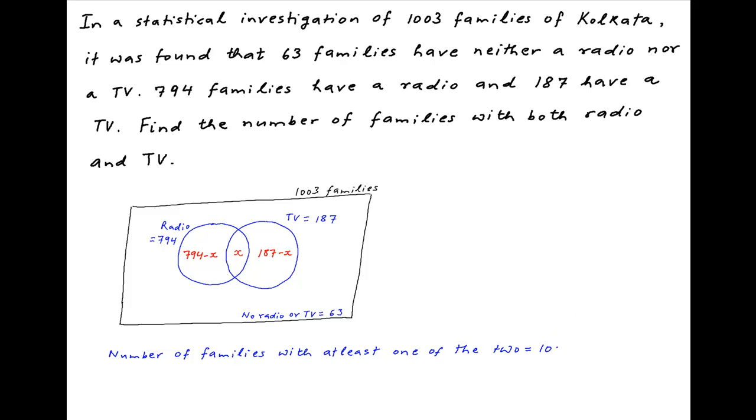Therefore, number of families with at least one of the two items is equal to 1003 minus 63, which is equal to 940. This is equal to the number of people who own a radio only plus number of people who own a TV only plus the number of people who own both.